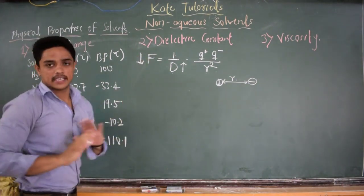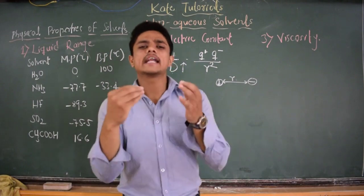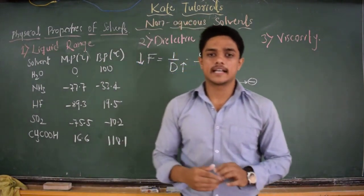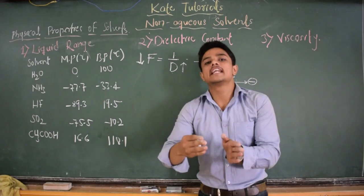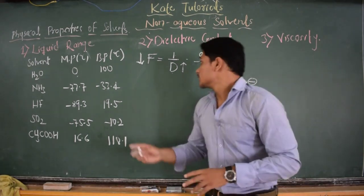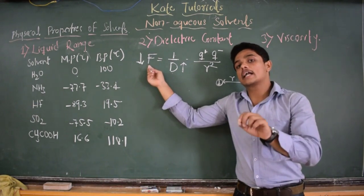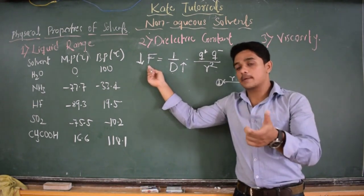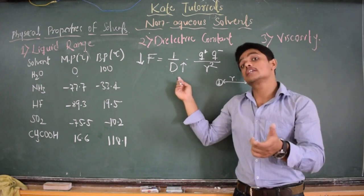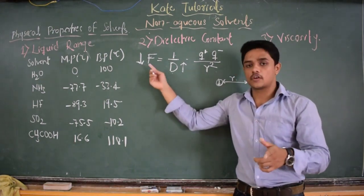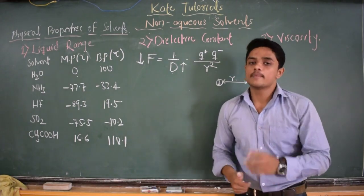From this expression, it is clear. As the dielectric constant of the solvent increases, the solute can be easily broken. This is because the force of attraction between the cation and anion present in the solute will decrease as the dielectric constant of the solvent increases, because of which the solute molecule can be easily broken.